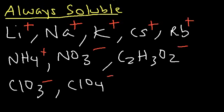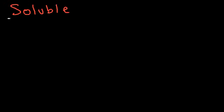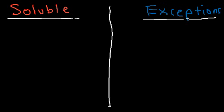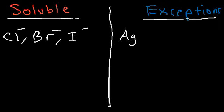Now there are some other ones you need to know. On the left side I'm going to put the ions that are generally soluble, and on the right side will be the exceptions — if the ions on the left are bonded to the ions on the right, they will be insoluble. Chlorides, bromides, and iodides are generally soluble, except when bonded to elements such as silver, lead, and the mercury(I) cation.